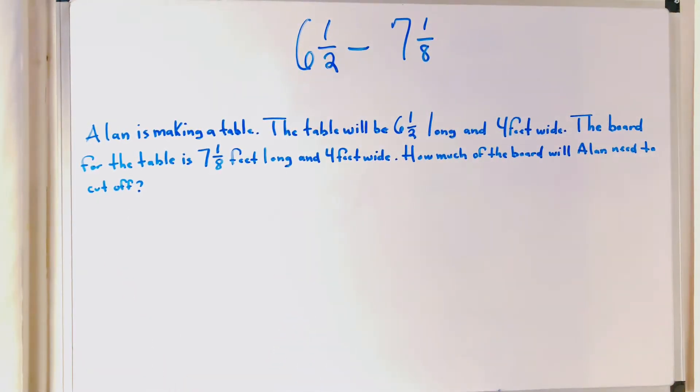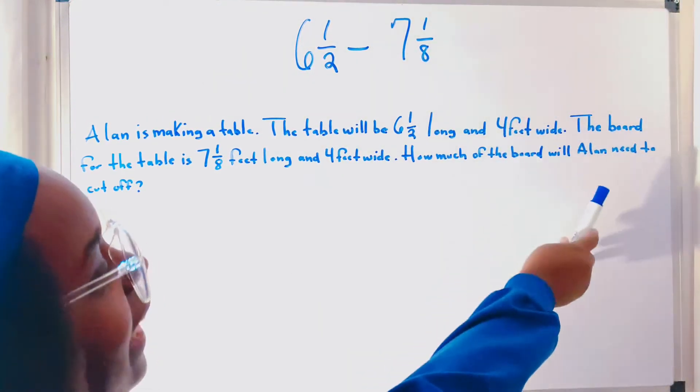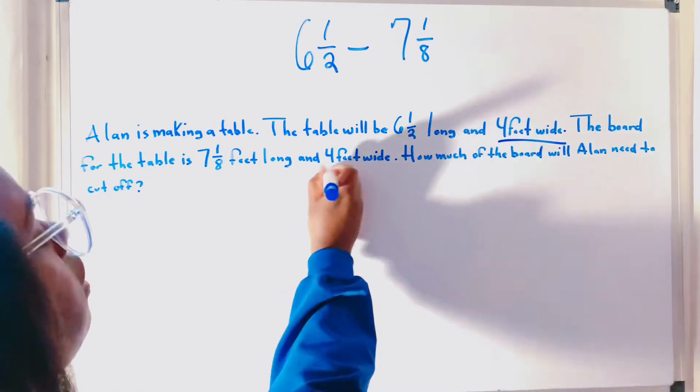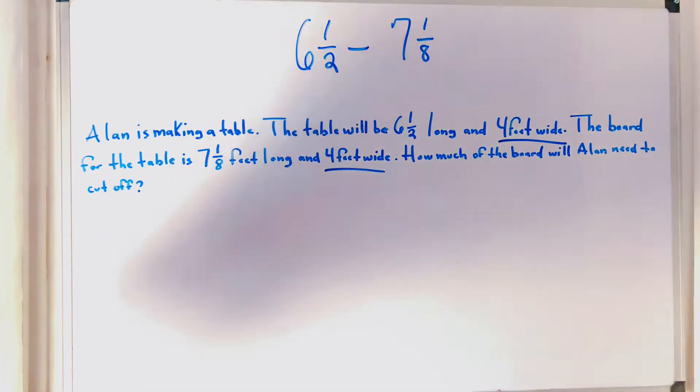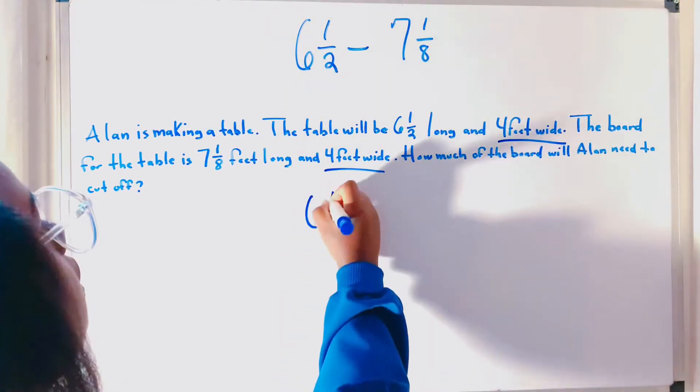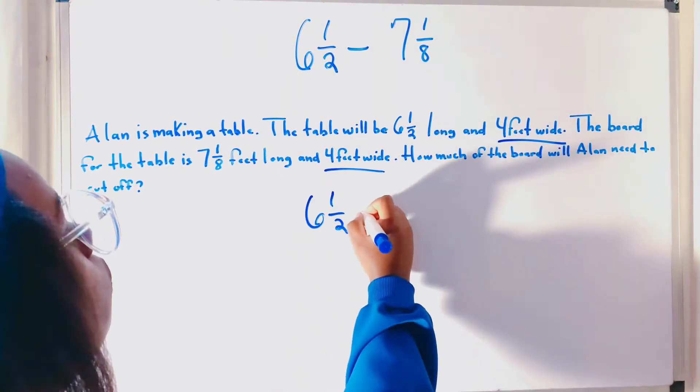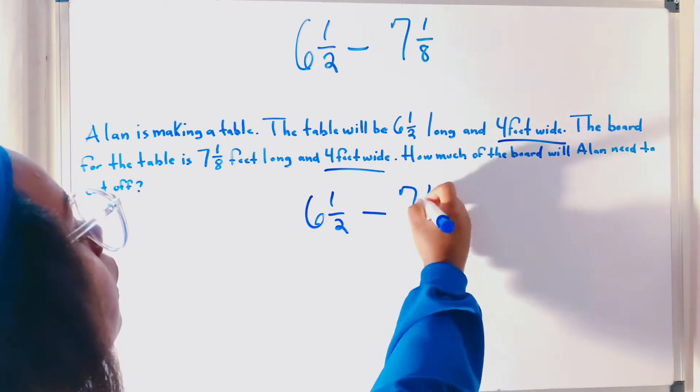So, we have 6 and 1 half minus 7 and 7 eighths. So, I forgot to tell y'all that the 4 feet, they canceled out. Because 4 minus 4 is 0. So, that's why we totally just disregarded that. So, I'm going ahead and rework this problem. That's 6 and 1 half minus 7 and 1 eighth.